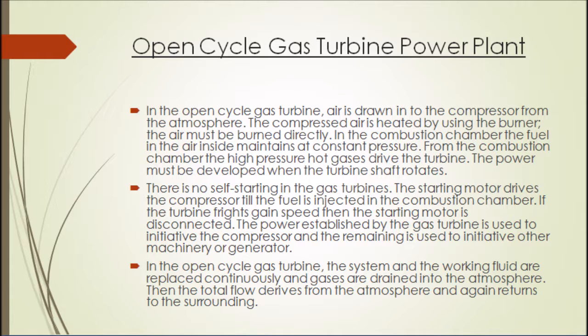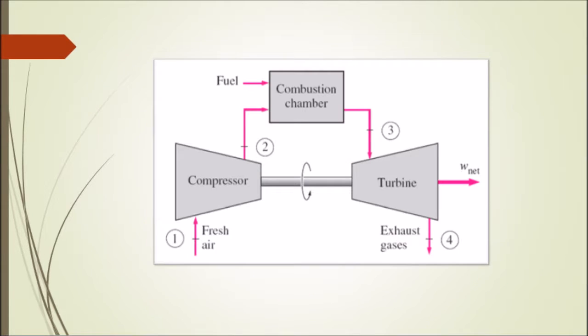If the turbine begins to gain speed, then the starting motor is disconnected. The power established by the gas turbine is used to drive the compressor, and the remaining power is used to drive other machinery or the generator. In the open cycle gas turbine, the working fluid is replaced continuously — gases are drawn from the atmosphere and then the total flow derives from the atmosphere and returns to the surrounding. The open cycle system draws air from the atmosphere into the compressor.